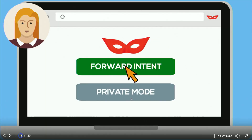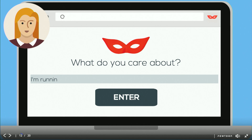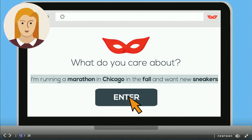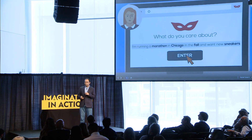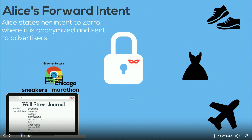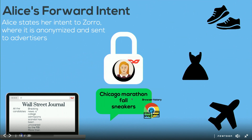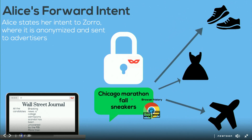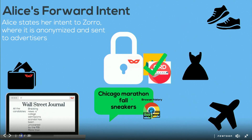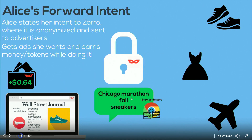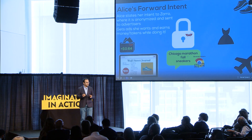So you download it — think of it like a Chrome extension. There are two ways to use it. One is a forward intent manner: you simply enter something like, 'I'm going to run a marathon in Chicago in fall and I'm looking for Snickers.' The system takes this, forwards your intent, understands what it means, and in an anonymized, encrypted manner sends it to different advertisers who understand the value of that. Based on that, they provide the right advertisement — you see what you want, not a dress for a wedding you don't want to attend. And in the process, you earn some money.